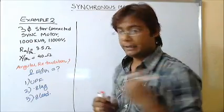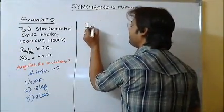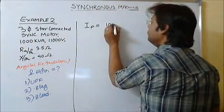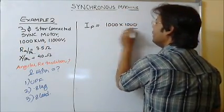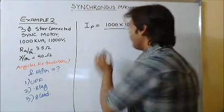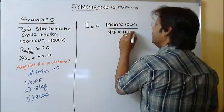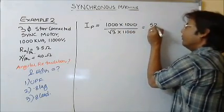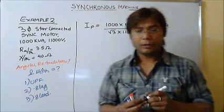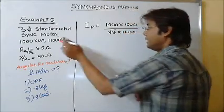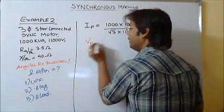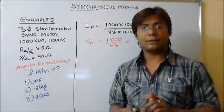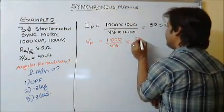First of all, I have to find the full-load current I_P, which I can get from: I_P = 1000 kVA divided by root-3 into 11,000, giving I_P as 52.5 amperes. Then the phase voltage V_P equals 11,000 divided by root-3, which equals 6351 volts.